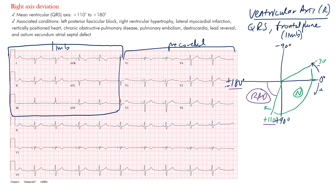From negative 30 to positive 110 is normal. Left axis deviation is in the region of negative 30 to negative 90. Up in the region of negative 90 to negative 180 is what we call the right superior axis, also known as the northwest axis — north and west — or 'no man's land.' Not many rhythms show up there, but you may see ventricular tachycardia with an axis in that direction.